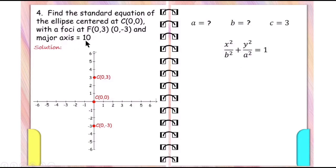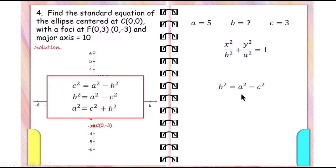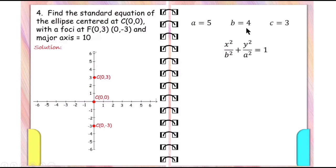The major axis is equal to 10, and the length of the major axis is 2a. Dividing by 2, a is equal to 5. Now we find b using b squared equals a squared minus c squared, where a is equal to 5 and c is equal to 3. 5 squared is 25 and 3 squared is 9; 25 minus 9 is 16, and the square root of 16 is 4. So b is equal to 4. Therefore, the standard equation of the ellipse is x squared over 16 plus y squared over 25 equals 1.